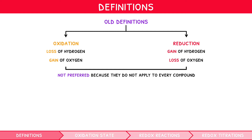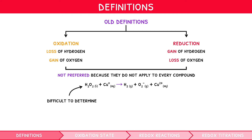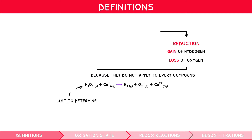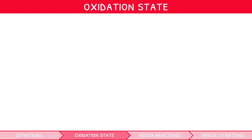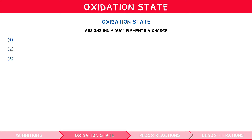In complex reactions it can be difficult to determine whether a species is losing or gaining electrons, hydrogen or oxygen. So a more mathematical approach can be used to define oxidation and reduction: oxidation state. This is a formal concept that regards all compounds as ionic and assigns individual elements a charge. There are three rules that must be obeyed.